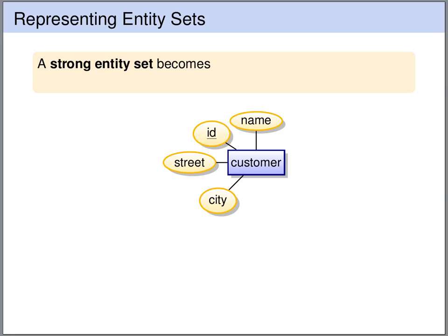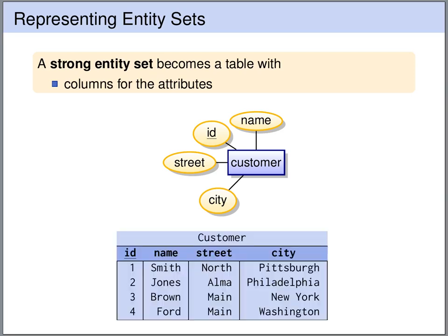A strong entity set becomes a table with columns for each attribute. In this example, we have a strong entity set customer with attributes id, name, street, and city. And we create a table customer with the columns id, name, street, and city.